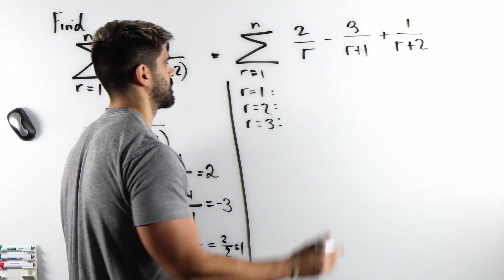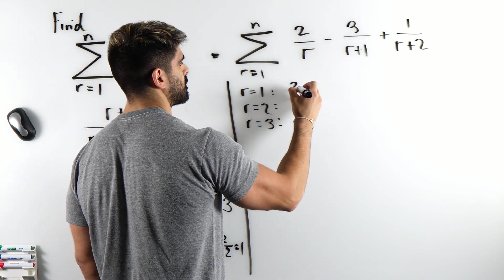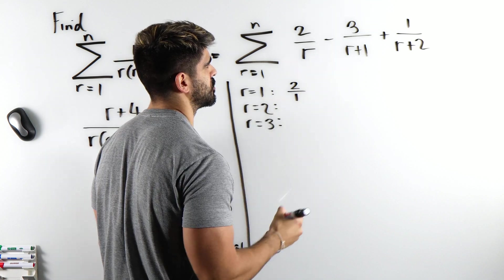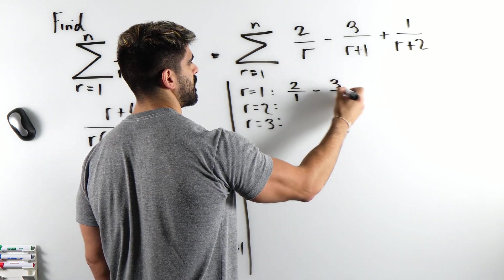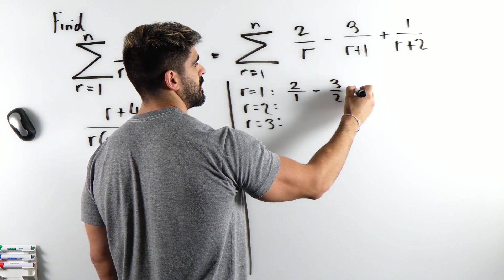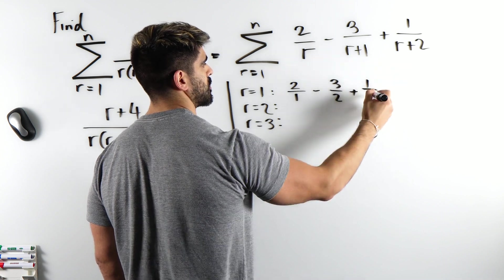So I have 2 over 1, I cannot be bothered to write that as just 2, minus 3 over 1 plus 1 is 2, plus 1 over 1 plus 2 is 3.